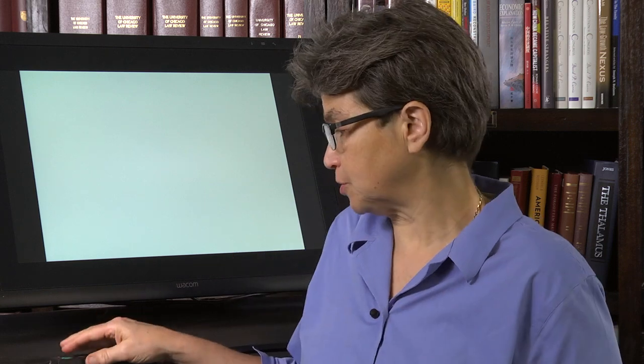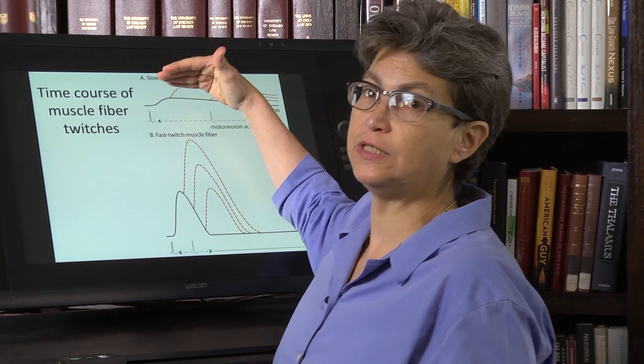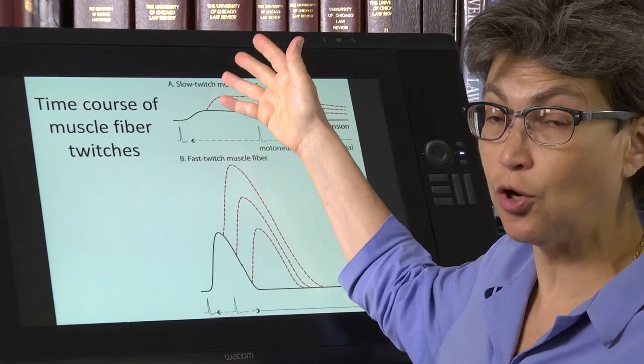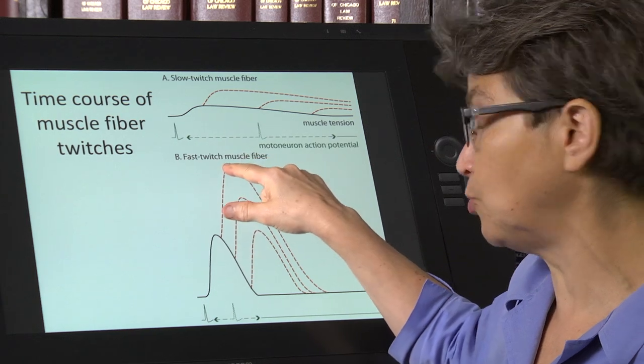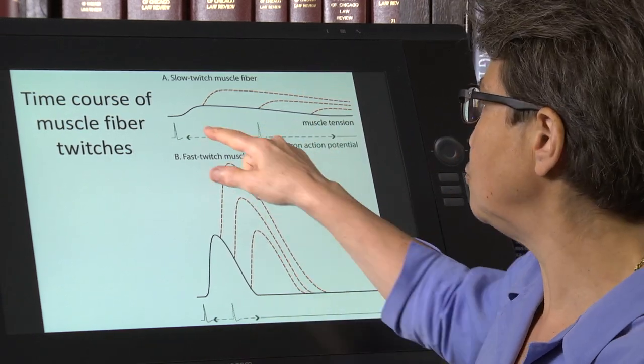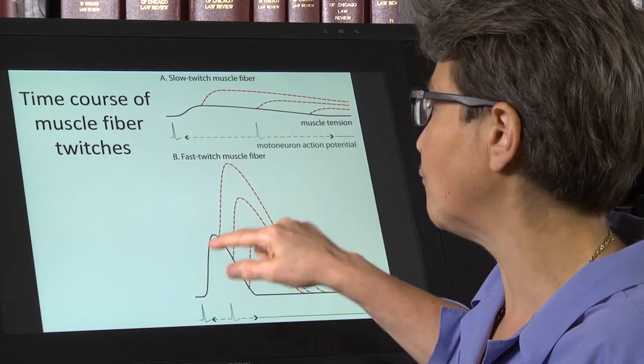Okay, so how do the motor units produce tension? They do it by the pattern of action potentials. What's really qualitatively different between a slow twitch motor unit and a fast motor unit is that the muscle fibers that are innervated produce either long changes in muscle tension or very short.